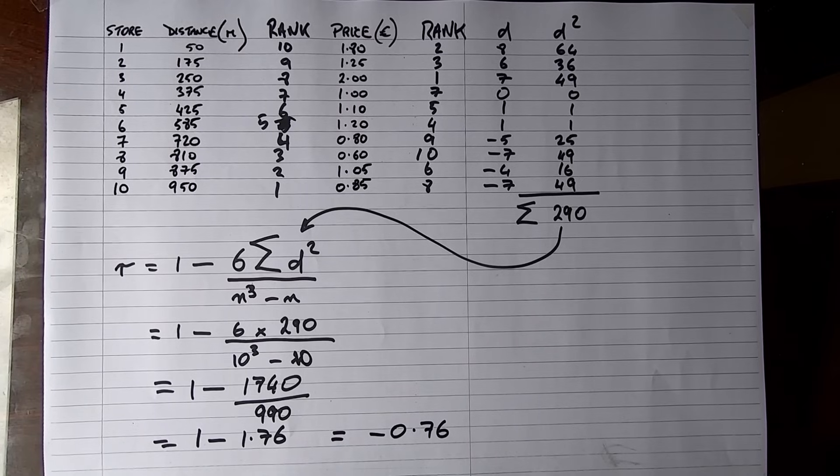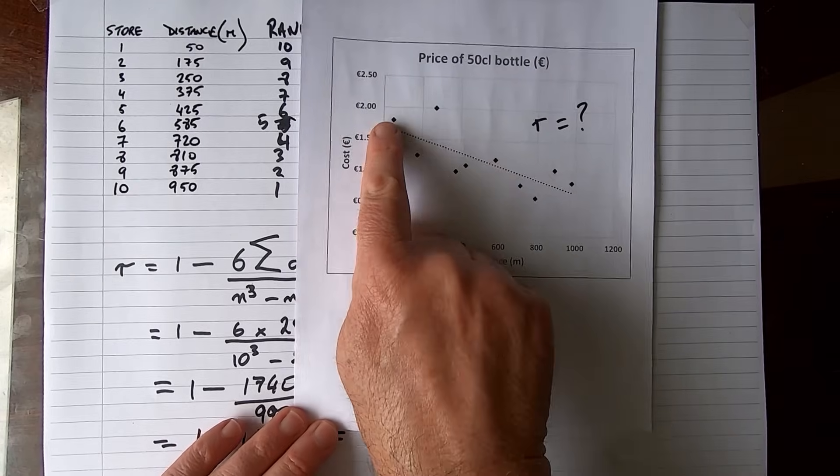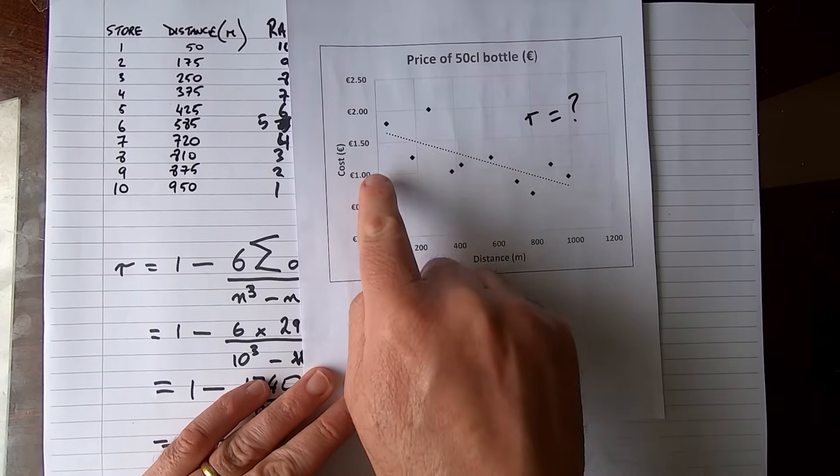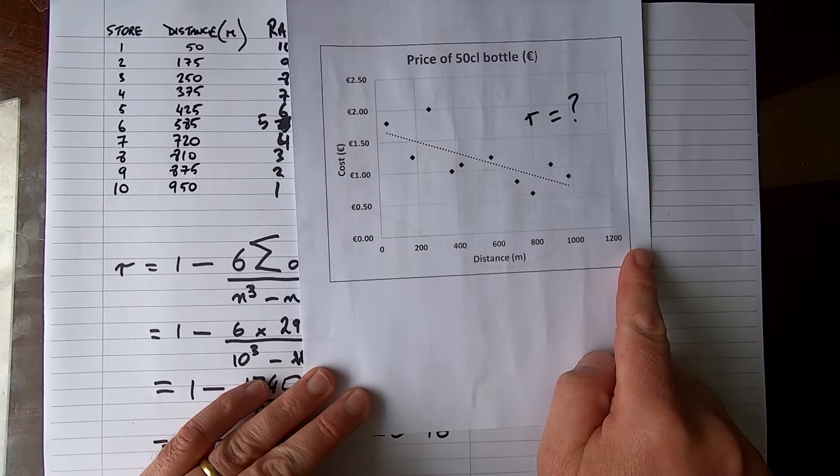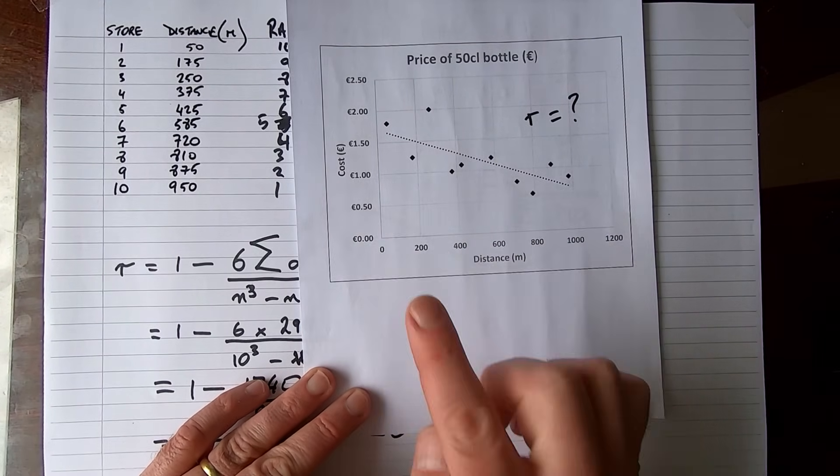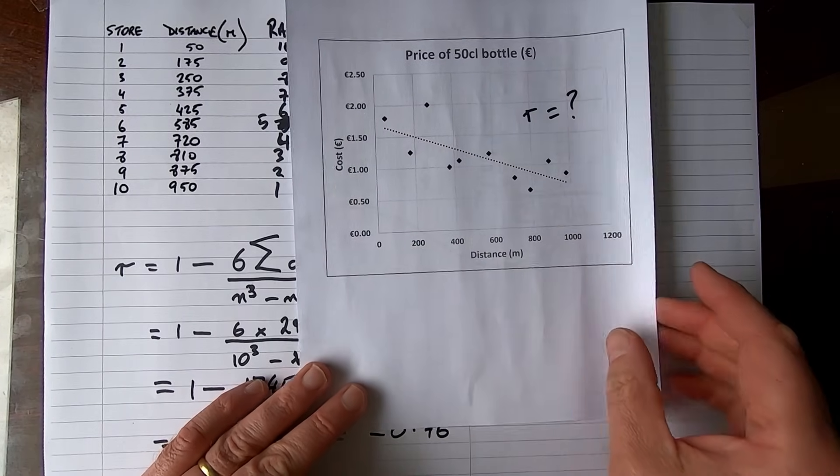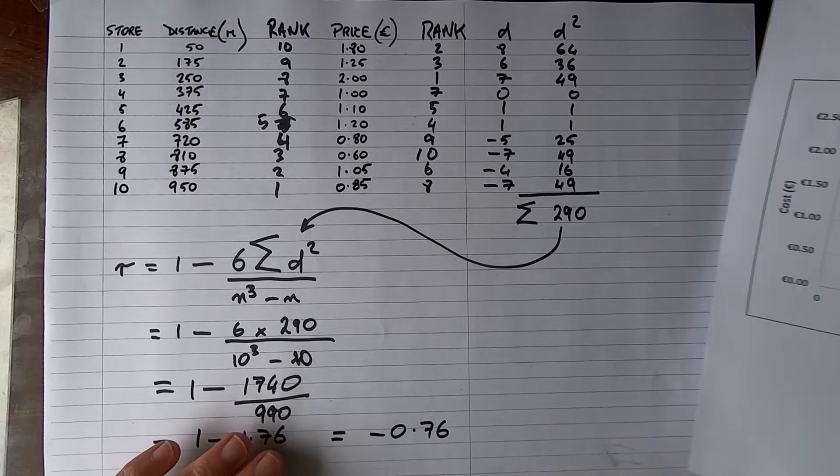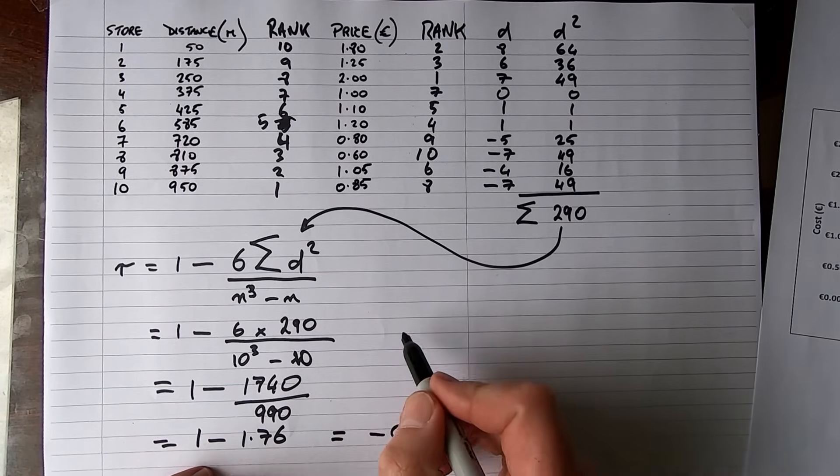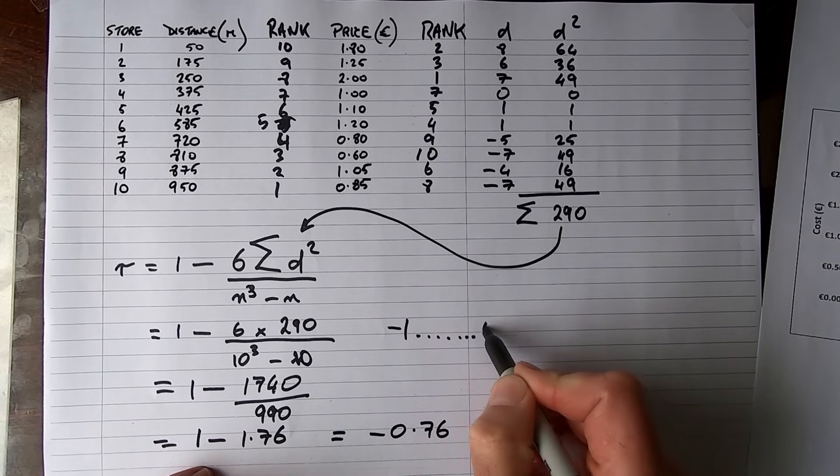Now what does this mean? Well, if we go back to our chart here for a second, we can see that there is a negative relationship. So as one increases, the other one decreases. As the distance increases, the price decreases. So we've got a trend here, a negative trend. That's why we've got a negative value for our correlation coefficient.